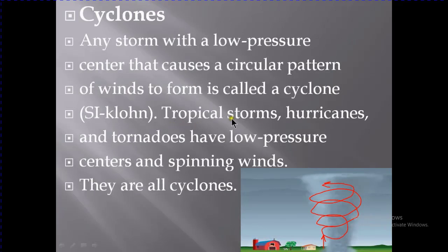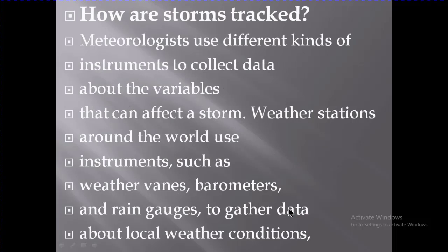Tropical storms, hurricanes, and tornadoes all have low-pressure centers and spinning winds — they are all cyclones. Here is an example of a cyclone in which the air moves and destroys things.